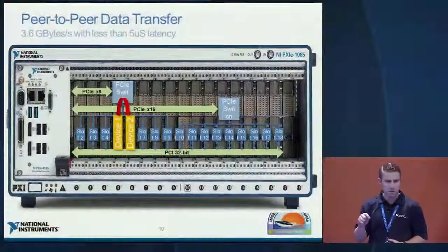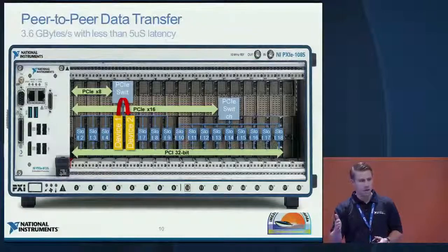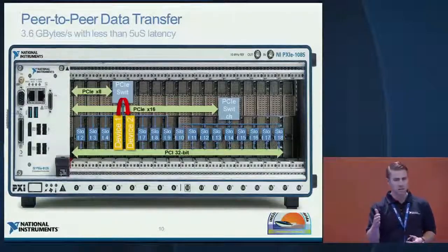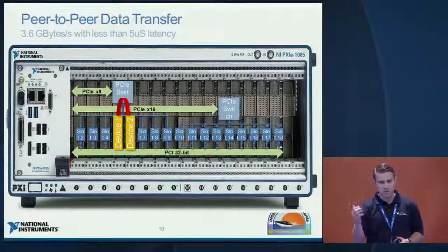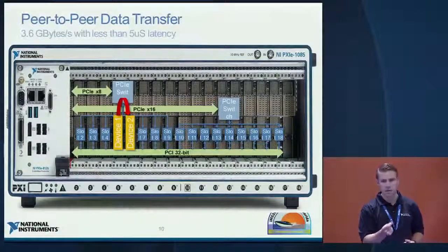Another key benefit of the switched PCI Express architecture is the ability to stream data peer-to-peer. You can send data directly from the module acquiring the data to, for example, an FPGA co-processor in an adjacent slot for inline DSP or FFTs. This has very low latency between slots and removes the requirement to send data all the way back to the host processor and then back to the FPGA — a very efficient method for processing.